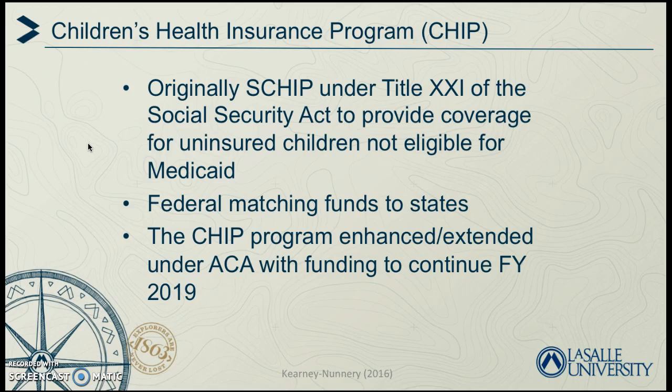The Children's Health Insurance Plan, otherwise known as CHIP, was originally enacted in 1997 under the Social Security Act to provide health coverage for uninsured children not eligible for Medicaid. It was extended under the ACA to continue through fiscal year 2019.